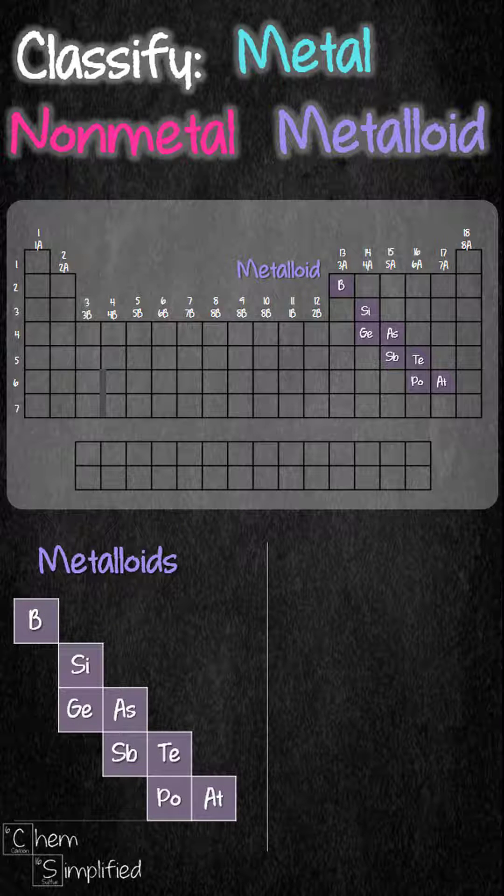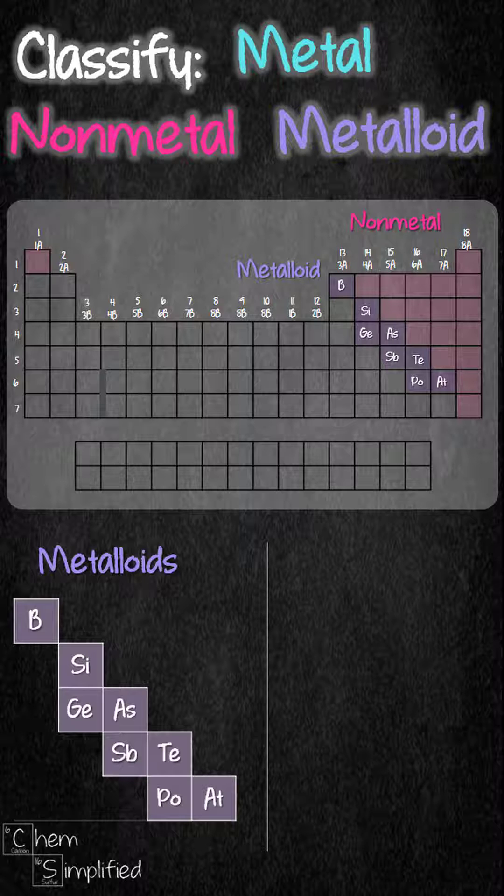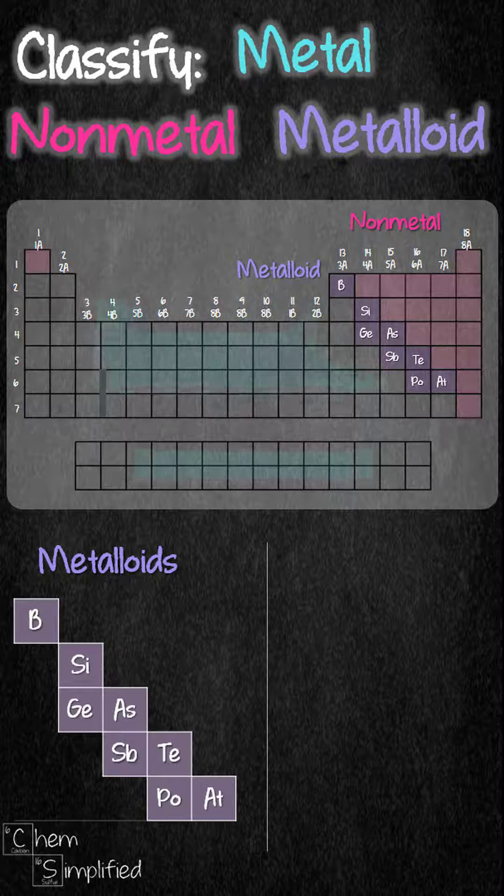Once we've identified our metalloids, all elements to the right, including hydrogen, are non-metals, whereas all elements to the left of metalloids are metals.